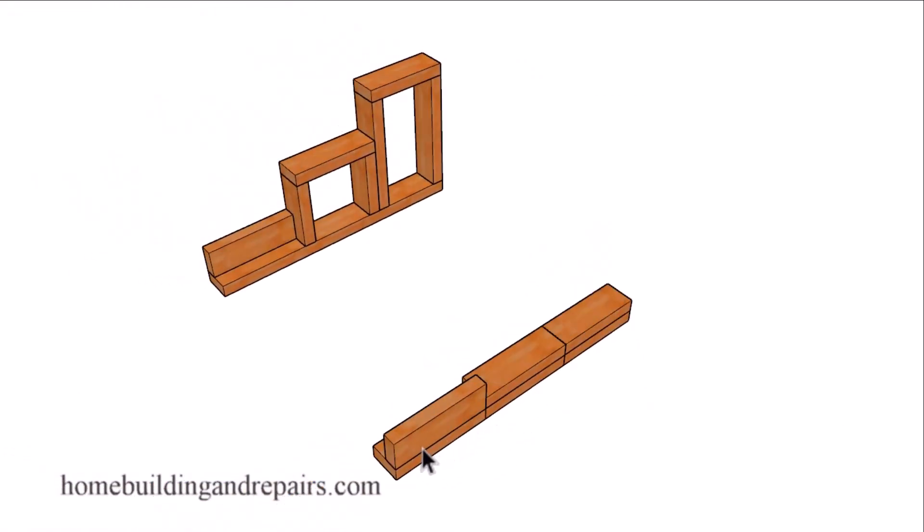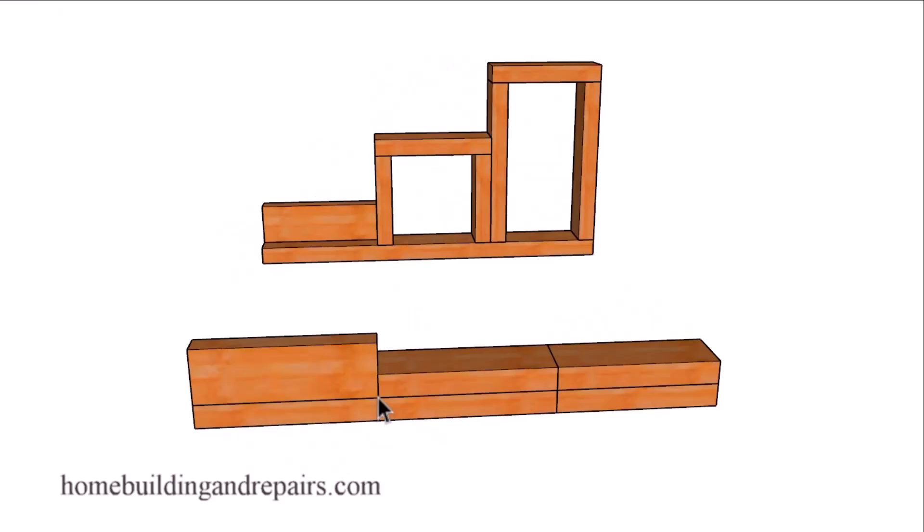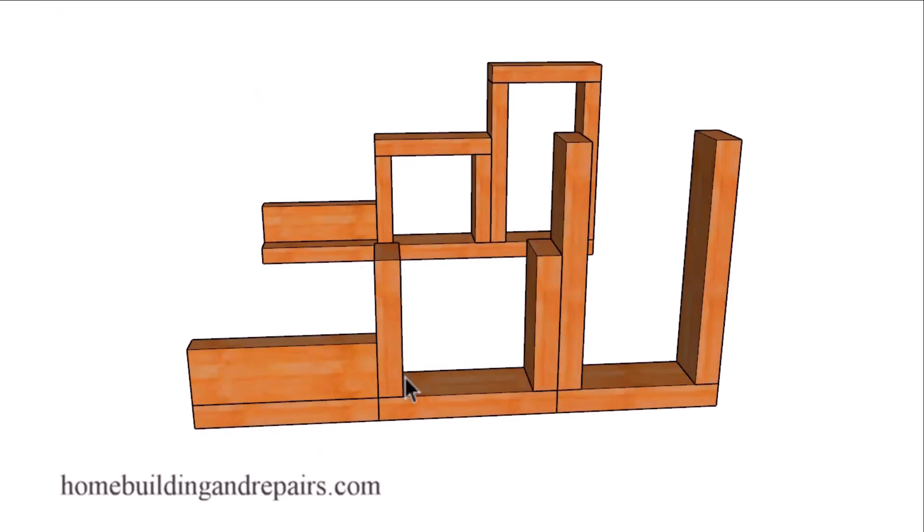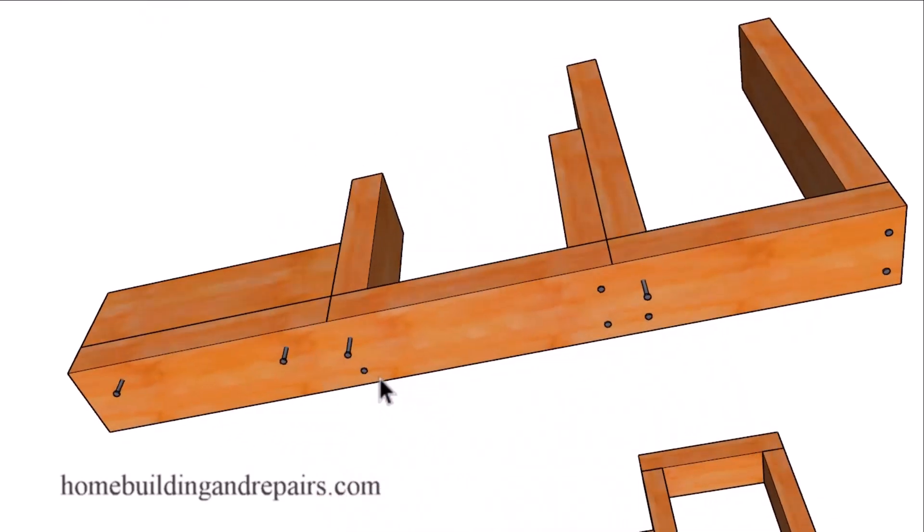Next up, let's go ahead and lay out our bottom board. You can do that by simply taking these blocks here and setting them on top of the board and then marking this area here. So we're going to have a mark here and a mark here. And we're going to use these marks here to line up our framing studs.